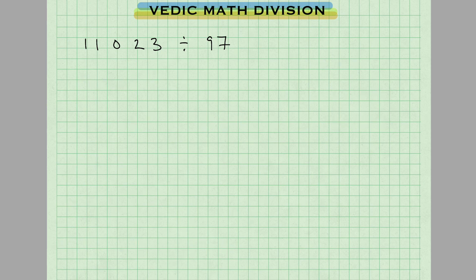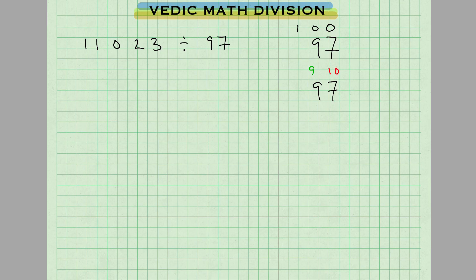First problem, we're going to take this number here and divide by 97. 97 is close to base number 100. Now to find the complement of 97, we're going to use our formula: all from 9, last from 10. So 9 minus 9 is 0, 10 minus 7 is 3. So the complement of 97 is 03.